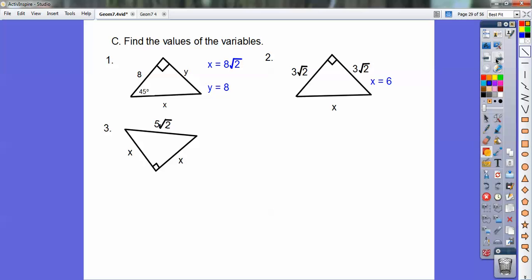Now this time on number 3, they give you that these two sides are equal because they're both x, so it's another isosceles right triangle. The hypotenuse has the root 2, so take it off, and that's what the side is.